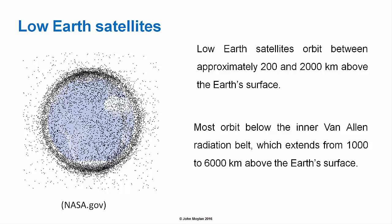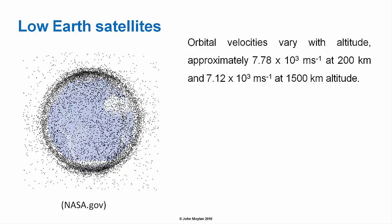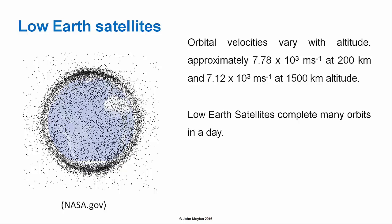The inner Van Allen belt extends from around 1,000 to 6,000 kilometers above the surface of the Earth. Orbital velocities vary with altitude, from approximately 7.78 × 10³ meters per second at 200 kilometers altitude to approximately 7.12 × 10³ meters per second at 1,500 kilometers altitude.